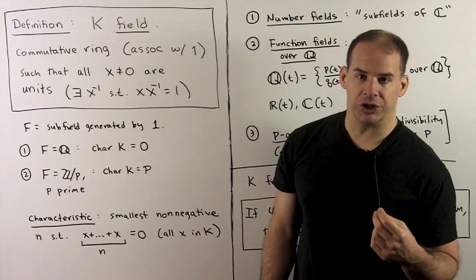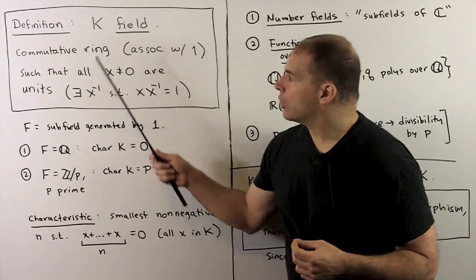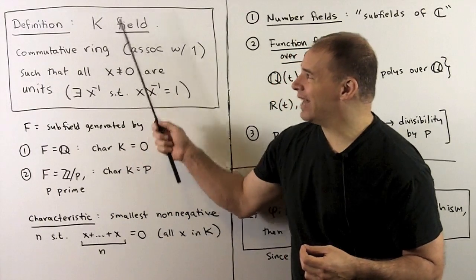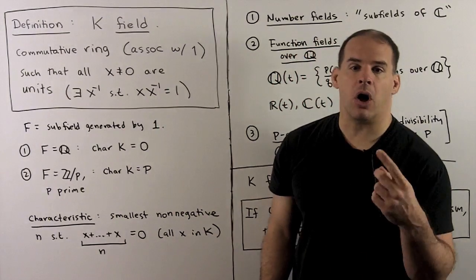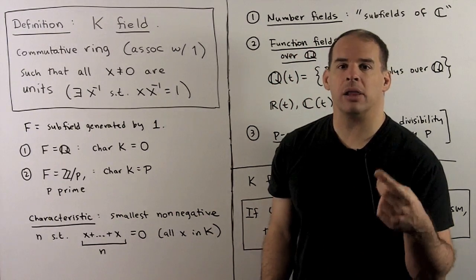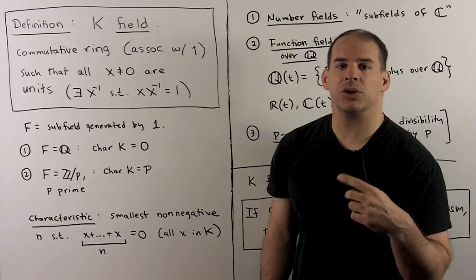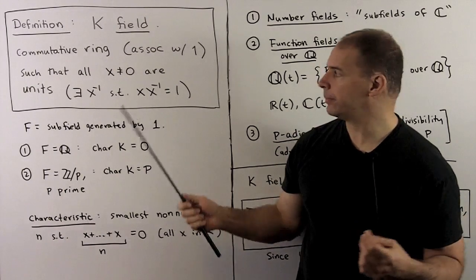We begin with definitions. Recall, a commutative ring K is called a field if all the non-zero elements are units — so all non-zero elements have multiplicative inverses.